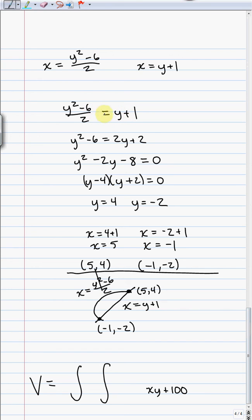And now, it looks complicated, but it's really just a quadratic. I can multiply by 2 to get rid of my fraction. That gives me y squared minus 6 is equal to 2y plus 2. Then I could combine like terms on the left side and set it equal to 0. So y squared minus 2y minus 8 is equal to 0. And then it is factorable. y minus 4 times y plus 2 is equal to 0. So that gives me y is equal to 4 and y is equal to negative 2.